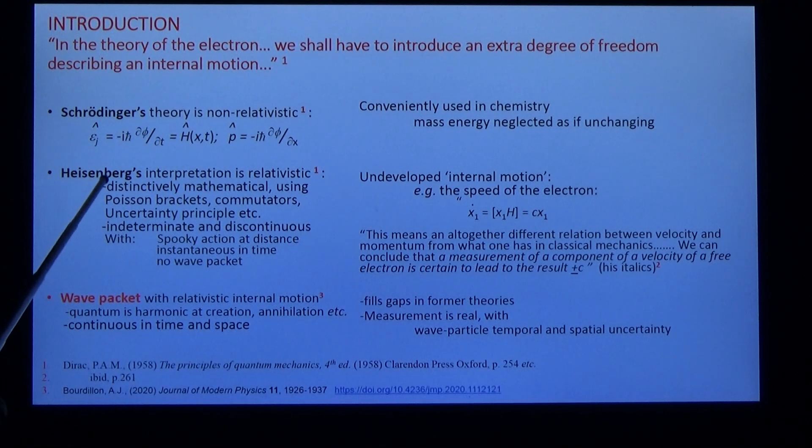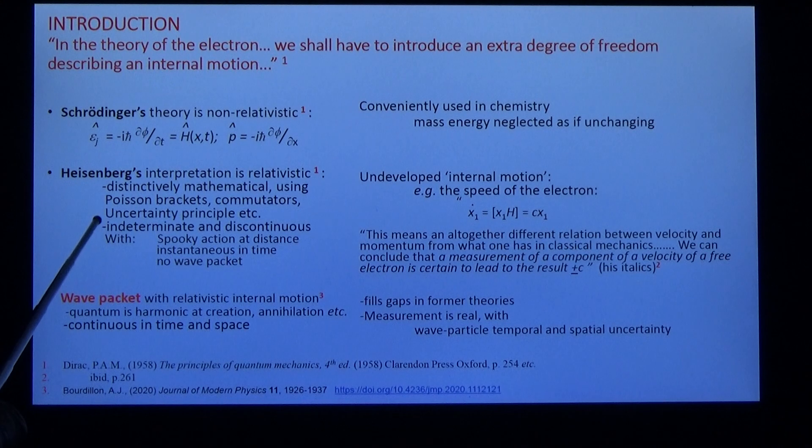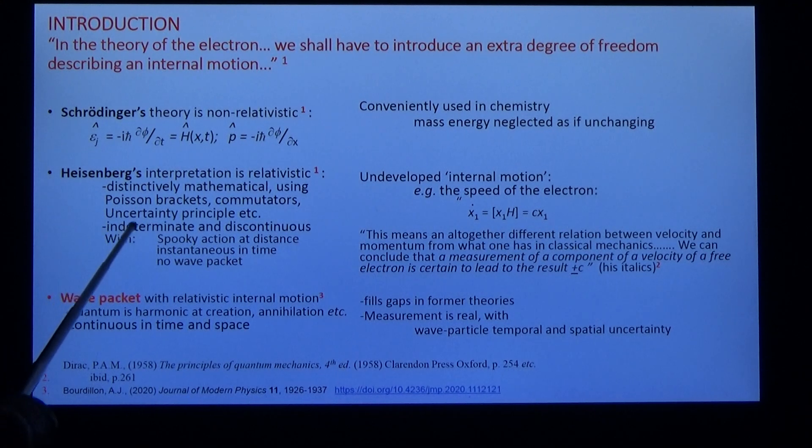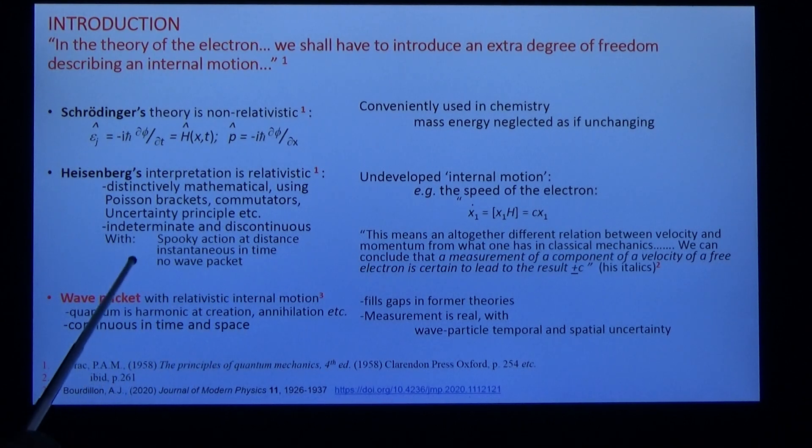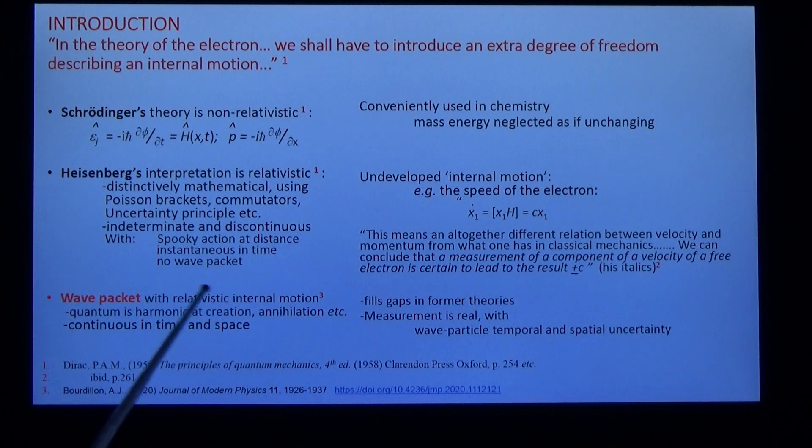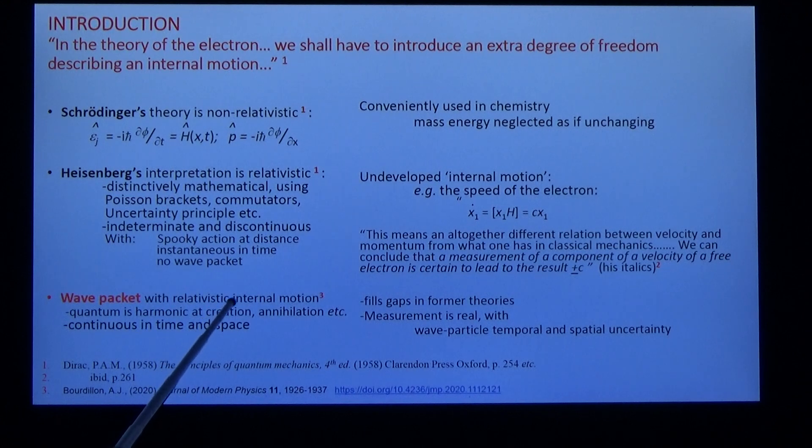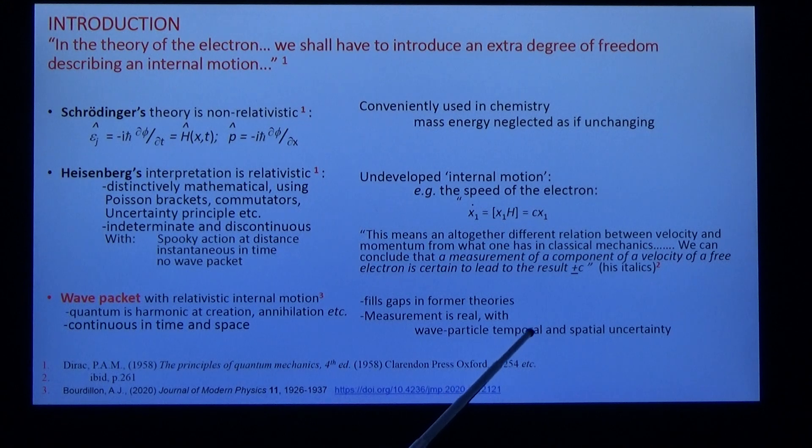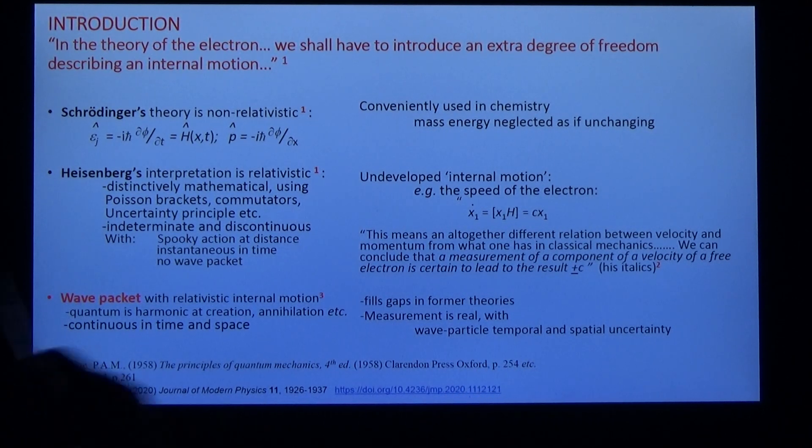Heisenberg's interpretation has other features: it's indeterminate and discontinuous, uses spooky action at a distance, is instantaneous in time, and has no wave packet. By contrast, the wave packet with relativistic internal motion has a quantum due to harmonic interactions at creation, annihilation, etc. Measurement is real with wave particle temporal and spatial uncertainty. The interactions are continuous on time and space.